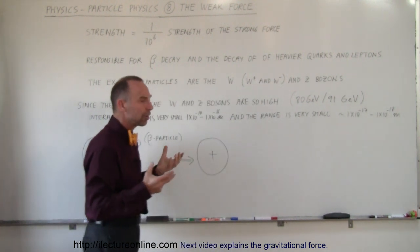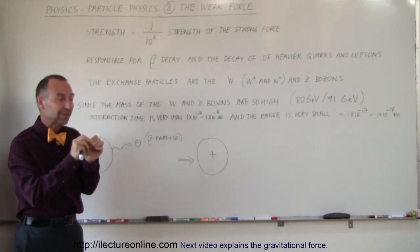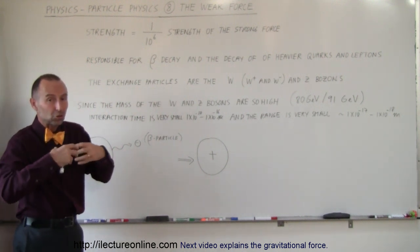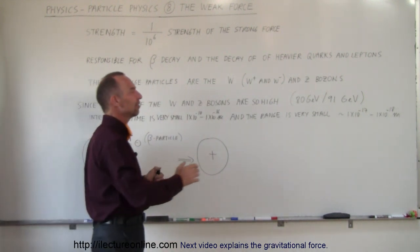Now the bosons are particles that have no structure to them, they're like point objects. It's kind of like an electron is a point object, there's no visible structure to the bosons. But yet, they're extremely massive in size.